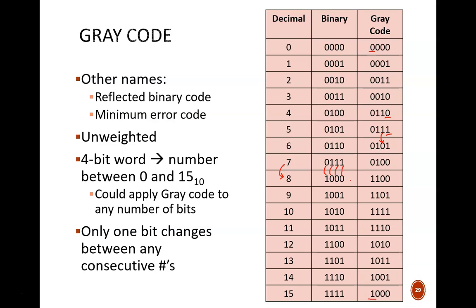With gray code, this problem is avoided. Only one bit changes when jumping from 7 to 8. So if that one bit changes a little too slow or too fast, it is still simultaneous with itself. No incorrect binary code will occur. We'll come back to gray code a few times in this course.